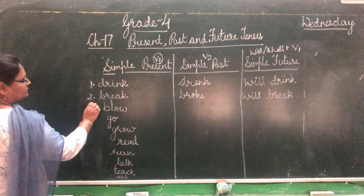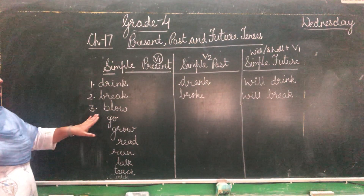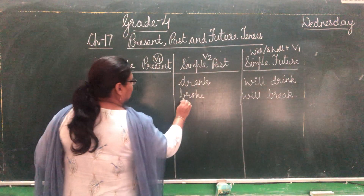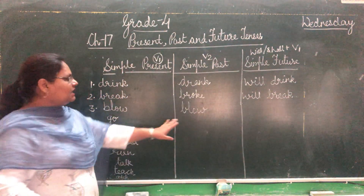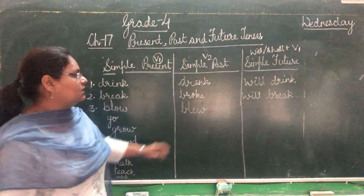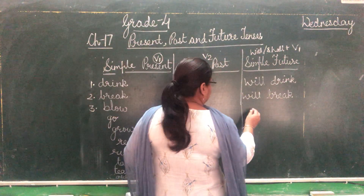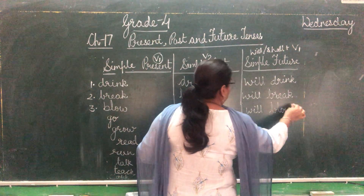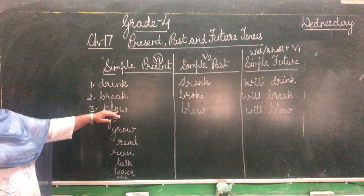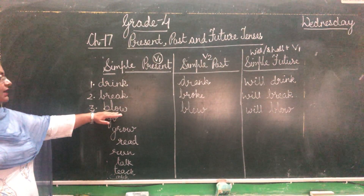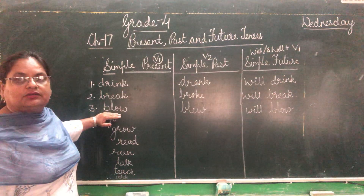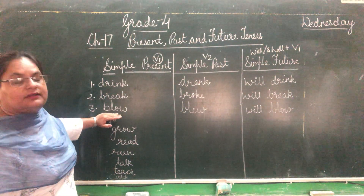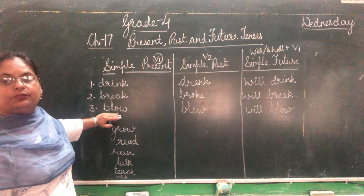The third word mam has taken is blow. Past tense of blow is blew — B-L-E-W. And for future, we will use will blow. We use the verb blow to talk about air pressure, filling air, or about the wind.